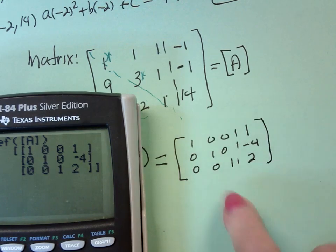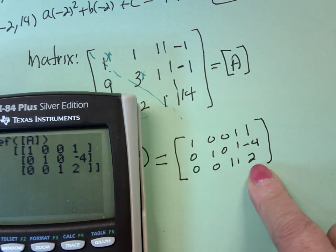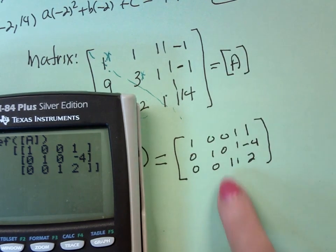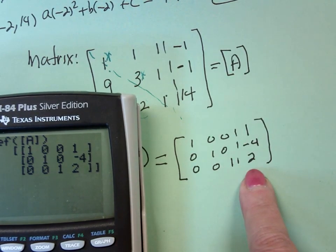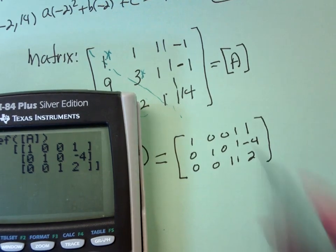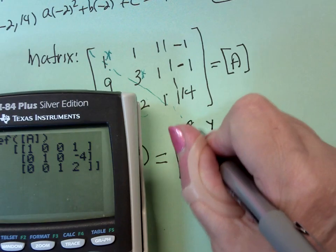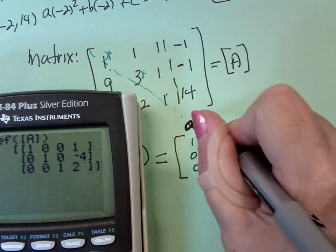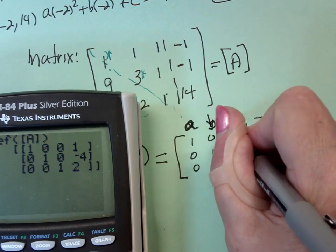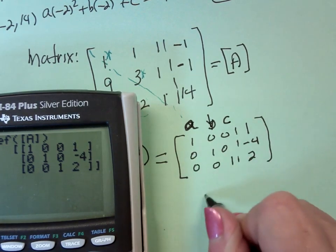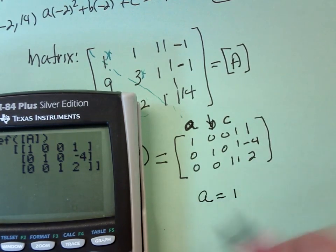Now if I had all zeros, I'd have a dependent system. Or if I have zeros here and a 2 there, I would have something that had no solution. But in this particular case, this is X, this is Y. Actually, it's not really X, Y, and Z. It's A, B, C. So this says that A is equal to 1, B is equal to negative 4, C is equal to 2.